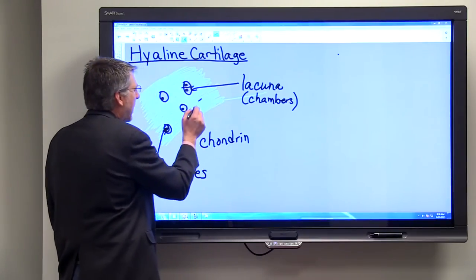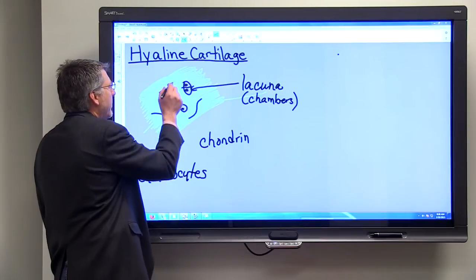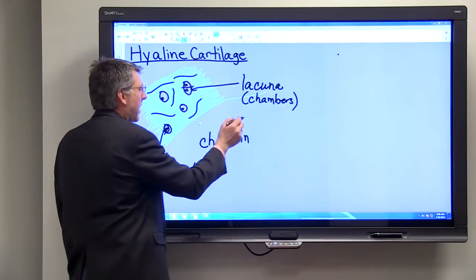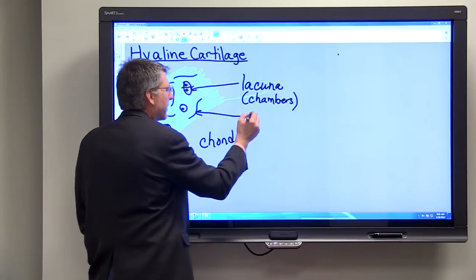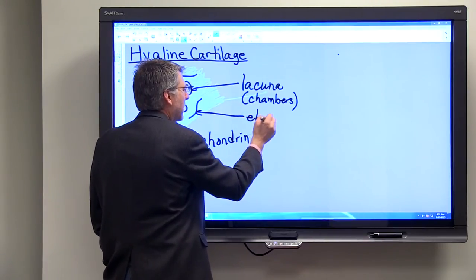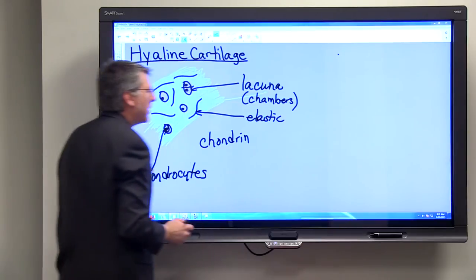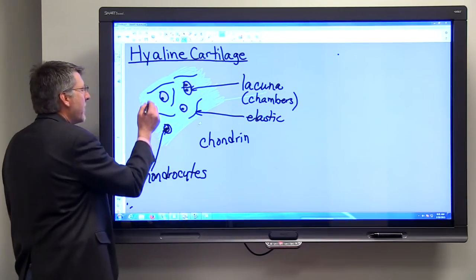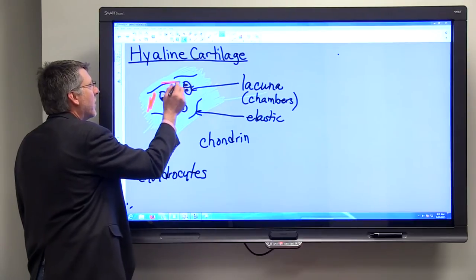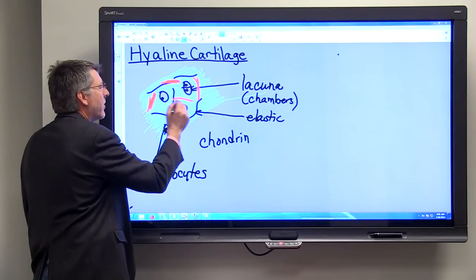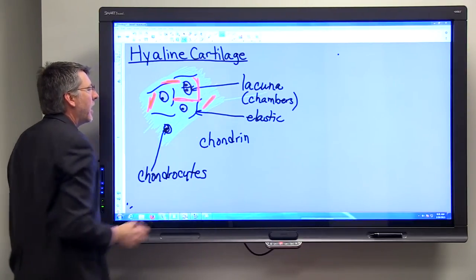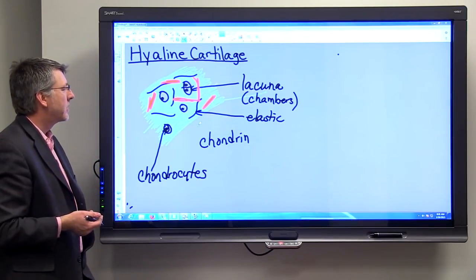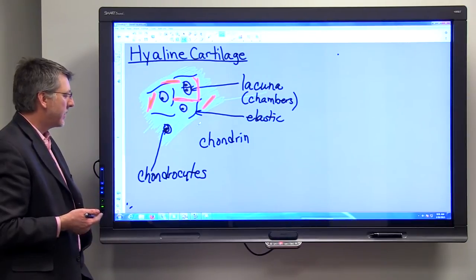Now within this chondrin, we may find our fibers, such as the elastic fibers. These are often difficult to see in the micrographs, but we may have some elastic fibers. We may have our collagenous fibers that we were talking about. And all of this working together gives hyaline cartilage its unique characteristics.